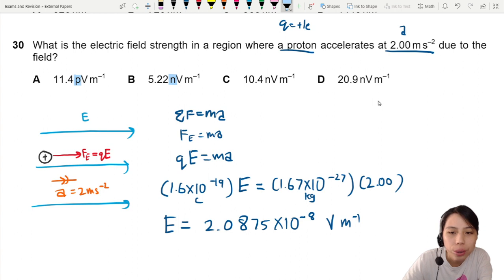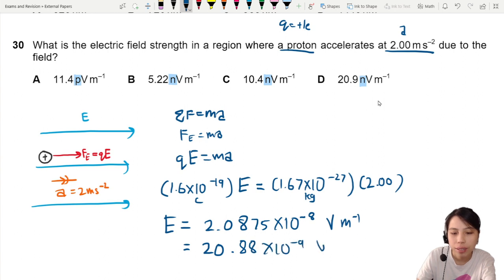They use nano. So maybe we'll switch to nano. Nano is 10 to the negative 9. So this would be 20.8 times 10 to the negative 9 volts per meter.